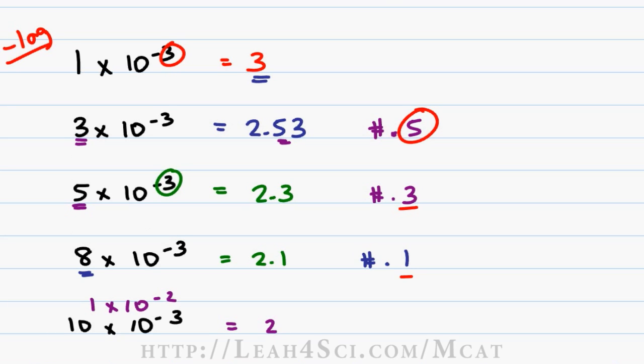In the last video, I showed you a trick on how to find a pH, pOH, or pKa value when given a concentration or Ka. The trick showed you that when you have a number times 10 to a negative power, that power becomes your pKa, pH, or pOH.